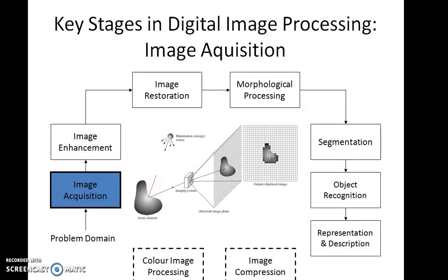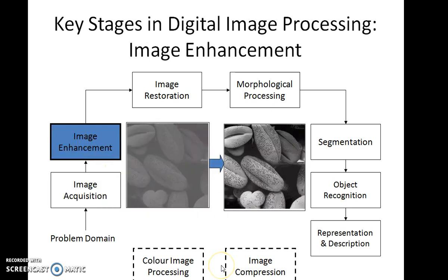These are the key stages in Digital Image Processing. It starts with image acquisition, where an image is acquired, converted into digital form, and represented. The next step is image enhancement, where a blurred image is improved in quality using different enhancement techniques.